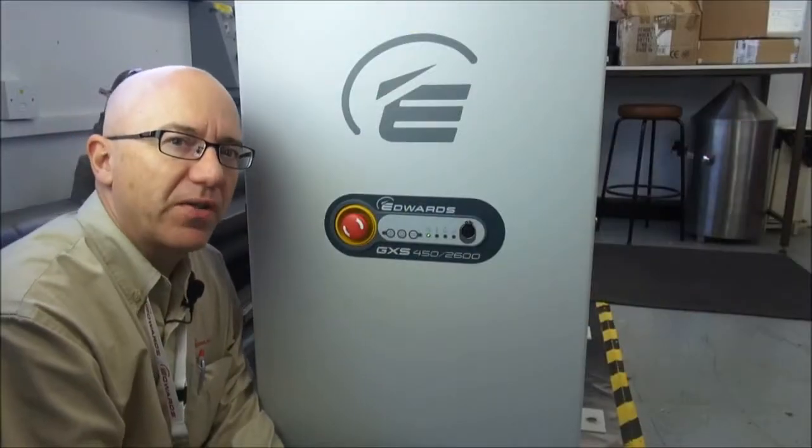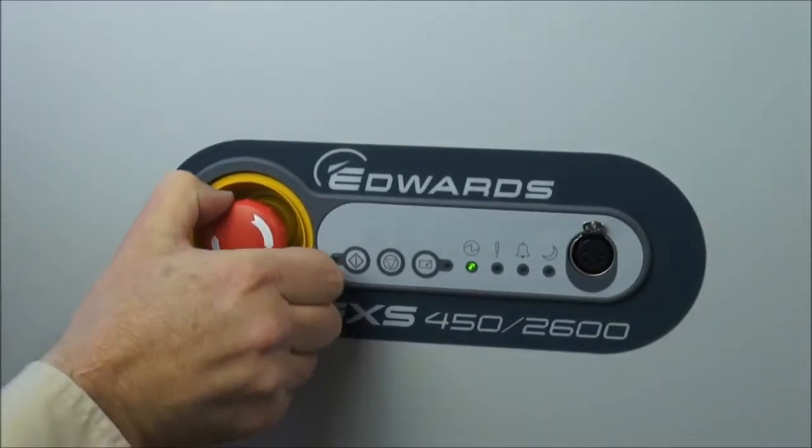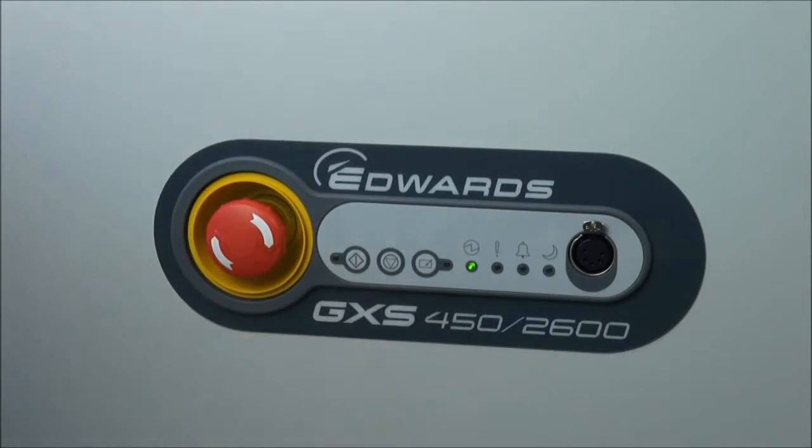So we're ready to start the GXS pump now. Just check that the emergency stop button is disengaged. It's out and then we're going to start it using the dashboard here. Three important buttons on the dashboard: the control button to take control of the pump, the start button and the stop button.